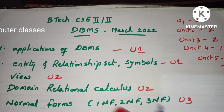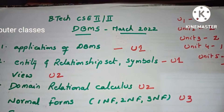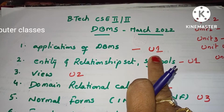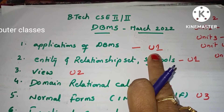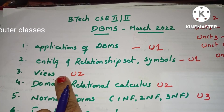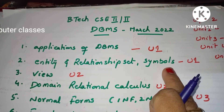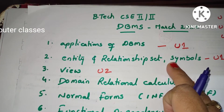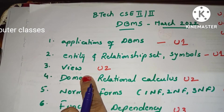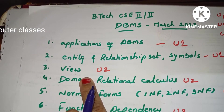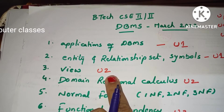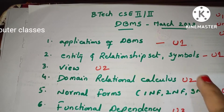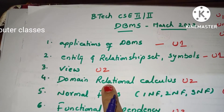Now I will go for analysis of this paper. The first question on applications of DBMS came from Unit 1 — introduction to DBMS. The second question on entity set, relationship set, and ER diagram symbols also came from Unit 1. So the first two questions are from Unit 1, each for 15 marks, giving 30 marks from Unit 1. The third question on views came from Unit 2, and the fourth question on domain relational calculus is also from Unit 2.